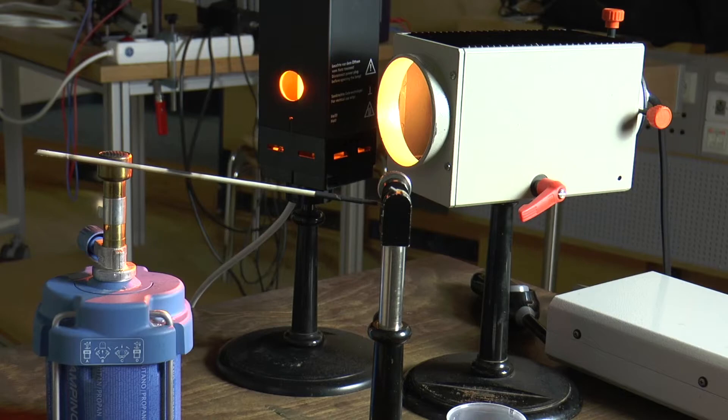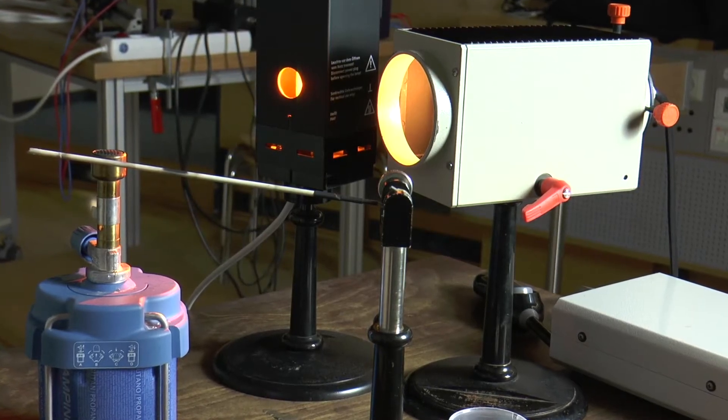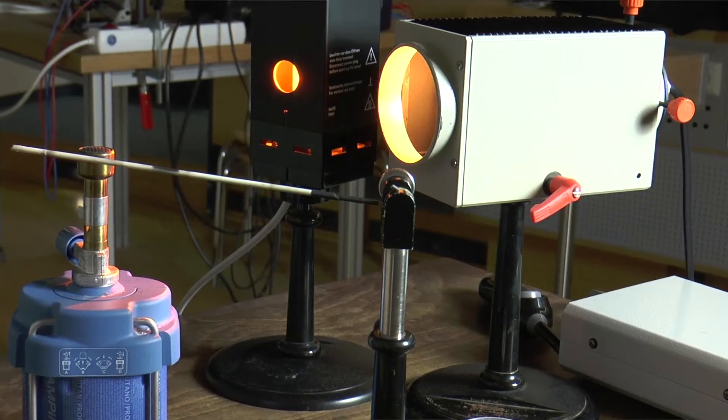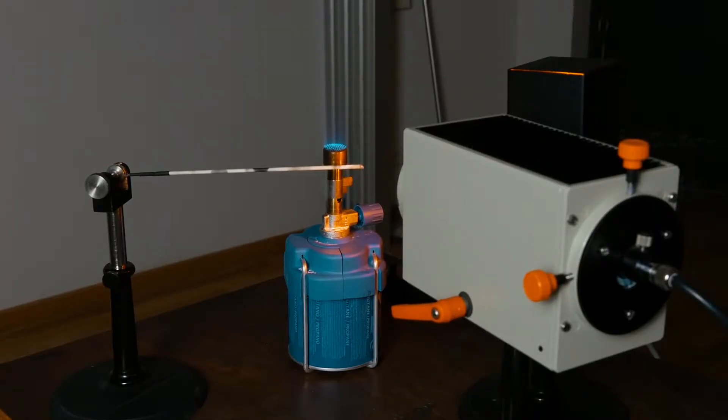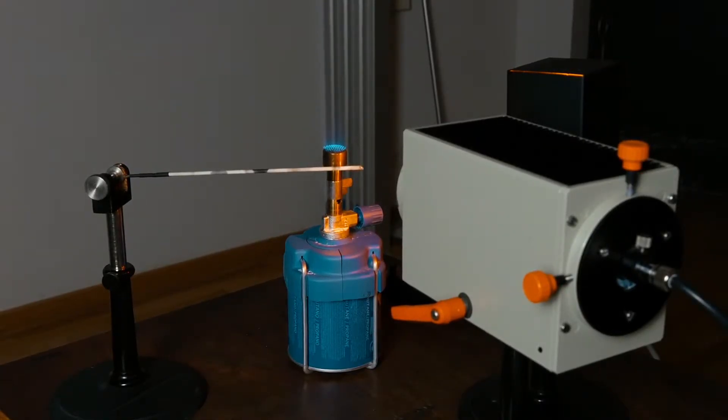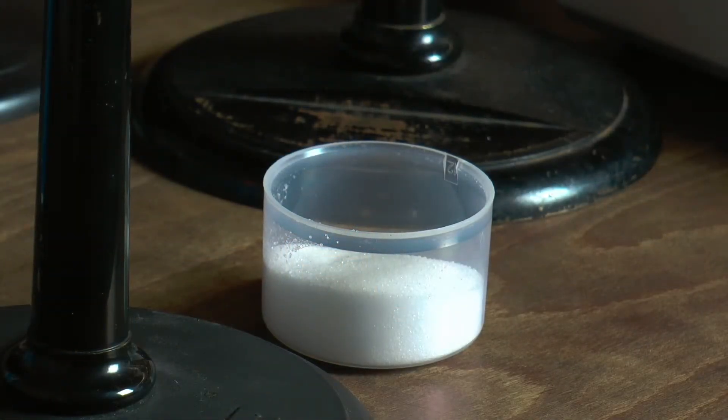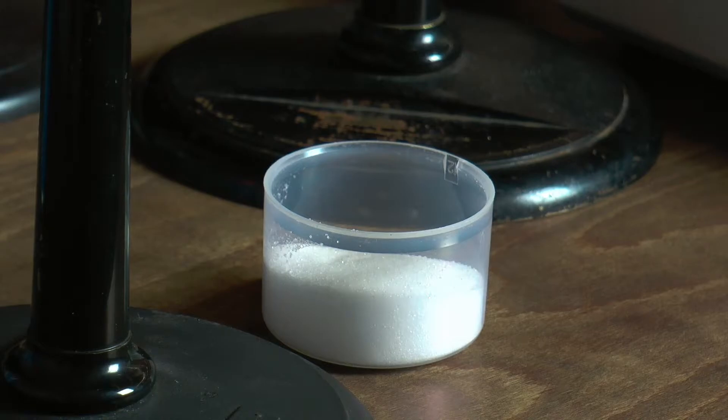A Bunsen burner is illuminated by the white light of a halogen lamp and the yellow light of a sodium vapor lamp. The light falls on a white wall and can be observed there. The tip of a non-flammable ceramic rod can be immersed in common salt, i.e., sodium chloride, and then held in the flame.